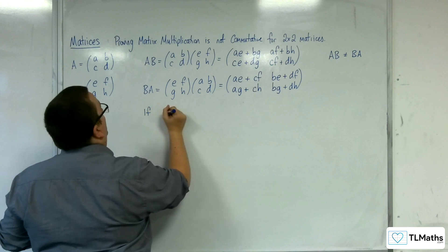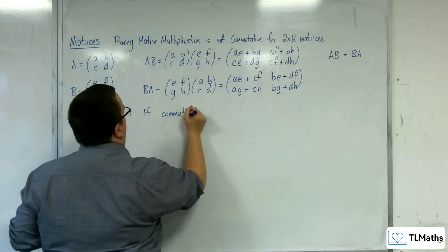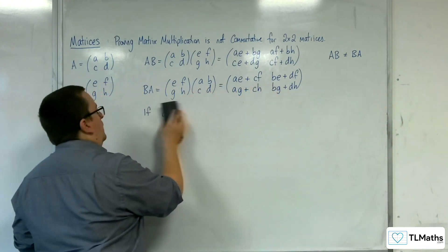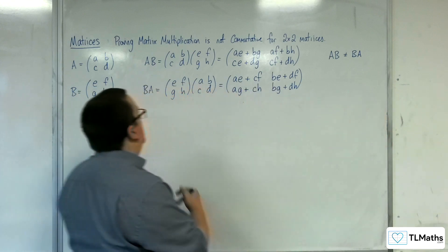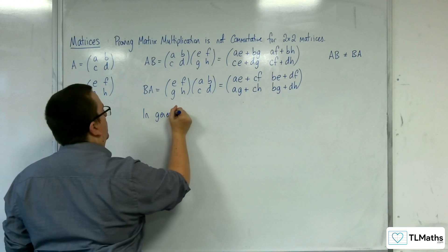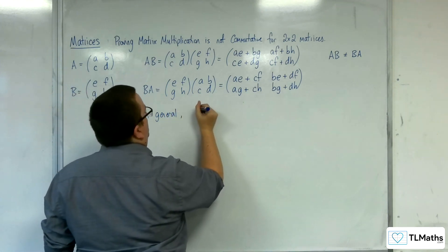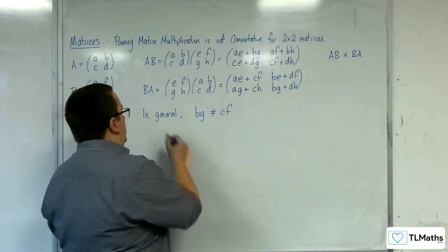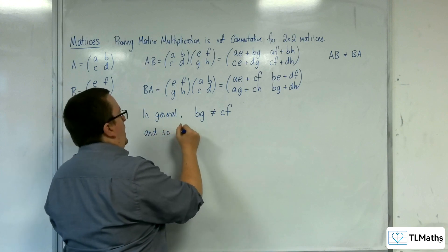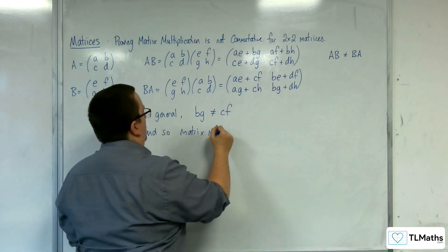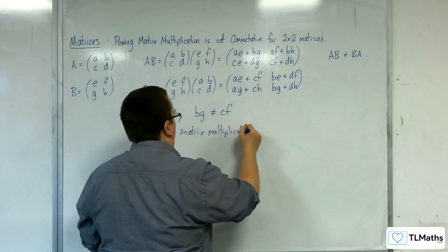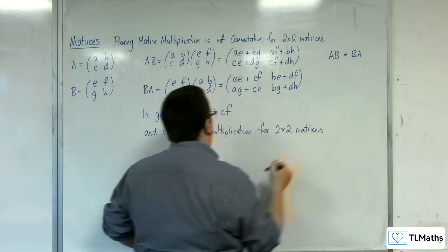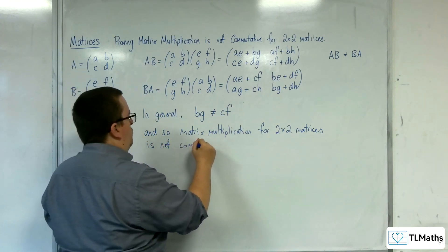So we should really write that in general, BG is not equal to CF. And so matrix multiplication for 2 by 2 matrices is not commutative — or generally commutative.